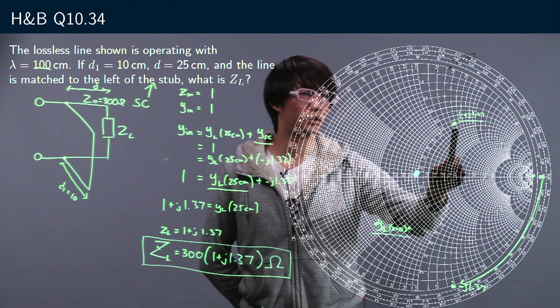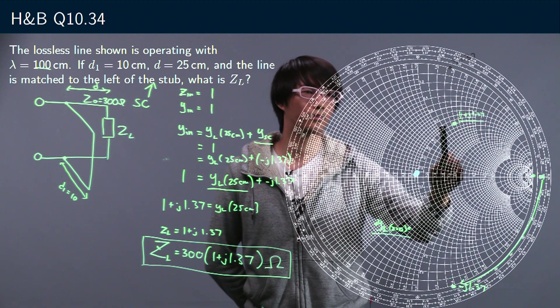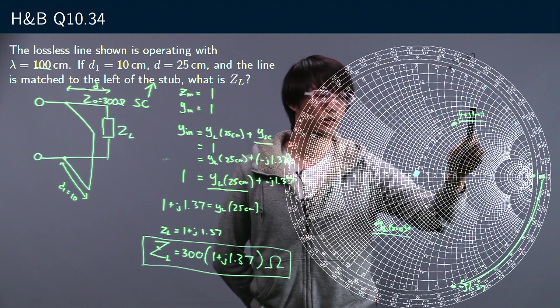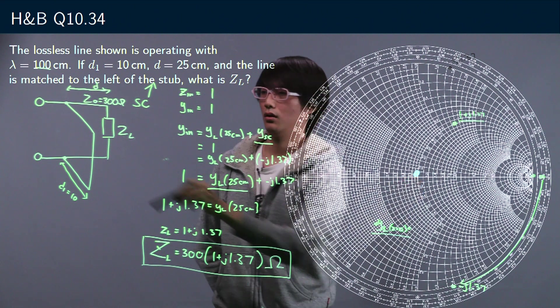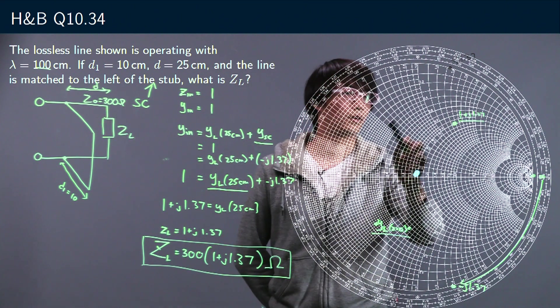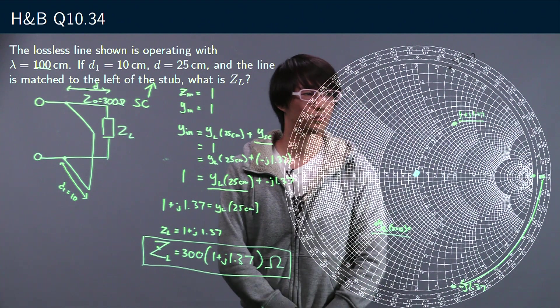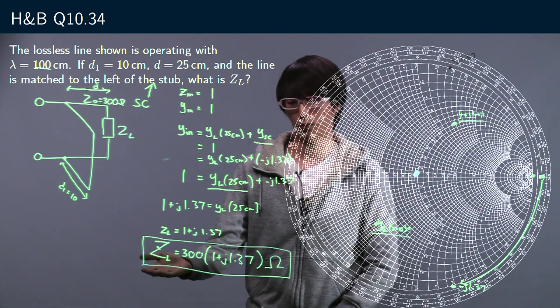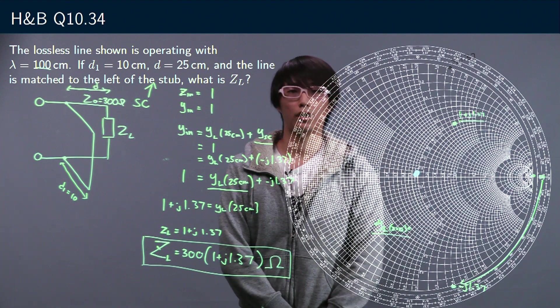Then we translated it over this way to find the input admittance at the load itself, and then rotated it 180 degrees once more to find the impedance, and we result in this. Thank you everyone.